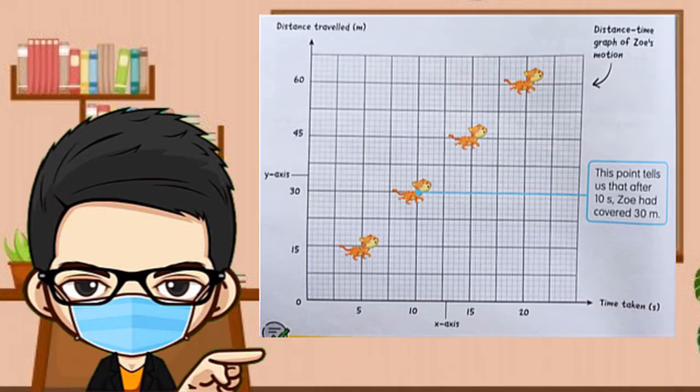In the graph, the time to cover a certain distance is represented on the horizontal axis. This is also known as the X-axis. Meanwhile, the distance traveled by Kitty is represented on the vertical axis. This is also known as the Y-axis.